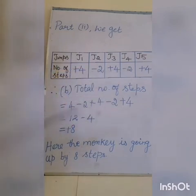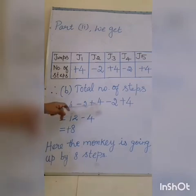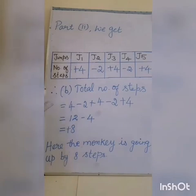First we add the positive integers. There are 3 positive integers in this sum. The positive integers are 4, 4, and 4. So 4 plus 4 is 8, 8 plus 4 is 12. Now we add the negative integers but put the negative sign. Here the 12 is the positive integer.